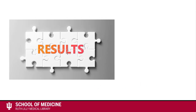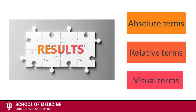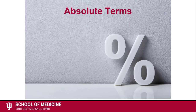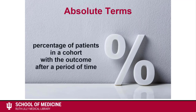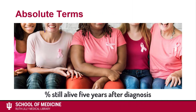Prognosis results can be interpreted in three ways: in absolute terms, in relative terms, or as a visual curve on a graph. Prognosis results expressed as an absolute term will be a percentage — the percentage of patients in a cohort with the event or outcome after a period of time, such as days, months, or years. For example, the percentage of patients in a cohort still alive five years after a breast cancer diagnosis.